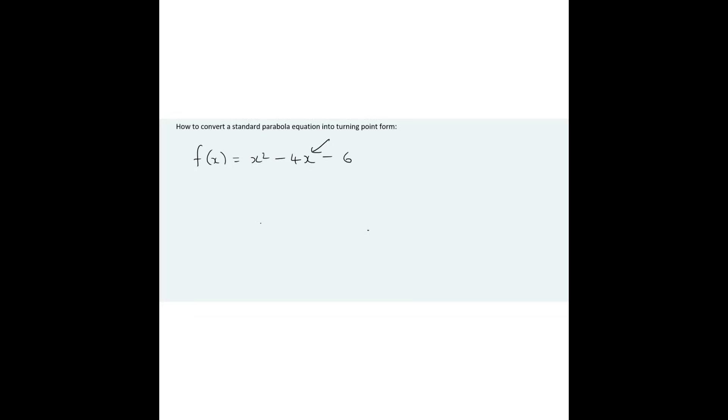The first step is to always make sure that the number in front of the x squared is a 1, which in this case it is. So we're going to say f of x is equal to x squared minus 4x. So you write the first two parts like that.